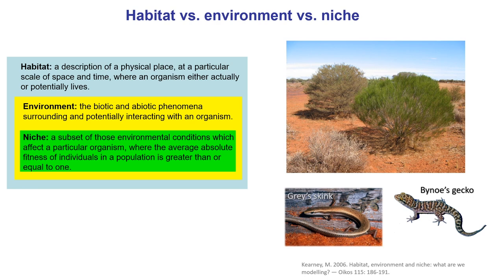And then the niche. There's a hierarchical structure here: environments are found within habitats, and niches are subsets of environments. They're the subset of environmental conditions which affect a particular organism's fitness — that subset of conditions where the absolute fitness of individuals of that type of organism allows them to maintain a population where the population growth rate is greater than 1. Not all environmental variables are necessarily relevant to an organism. The particular wavelengths of red and blue light are really important for a plant but relatively unimportant for the gecko. Magnetic fields may be important for a bird for navigation, but not for every organism. So the niche is a subset of environmental conditions strongly affecting fitness, and within those conditions, it's the ranges that allow the organism to persist.